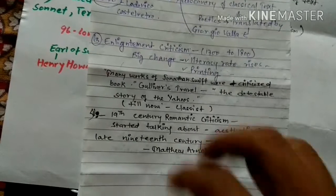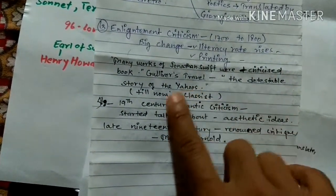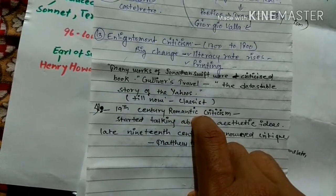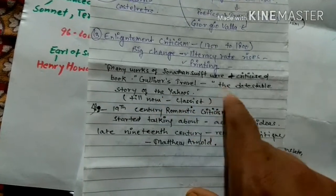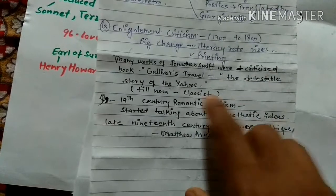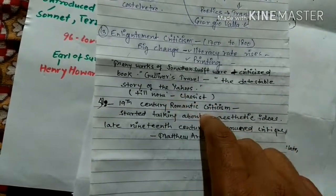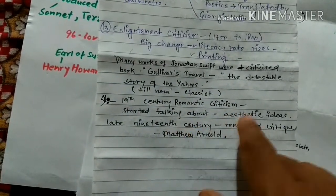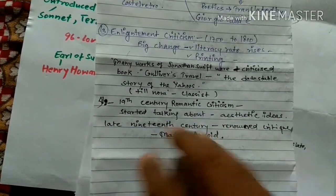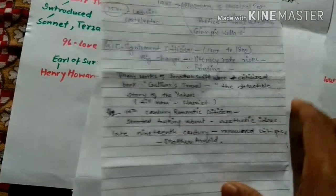In 19th century Romantic criticism, either someone is a classicist or they are Romantic. Romantic means free from rules — they want to use imagination and focus on aesthetic ideas. If you stick to rules you are a classicist; if you want to be free from rules you become Romantic. So 19th century criticism focused on aesthetic ideas and aesthetic pleasure. In the late 19th century, renowned critic Matthew Arnold came on the scene.